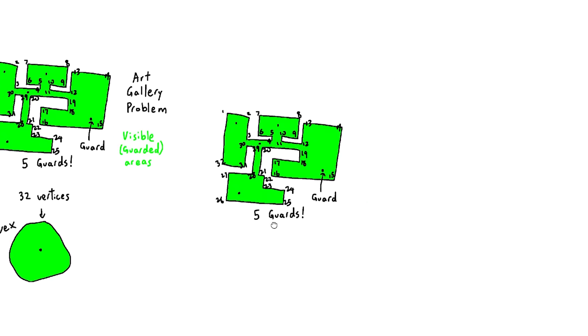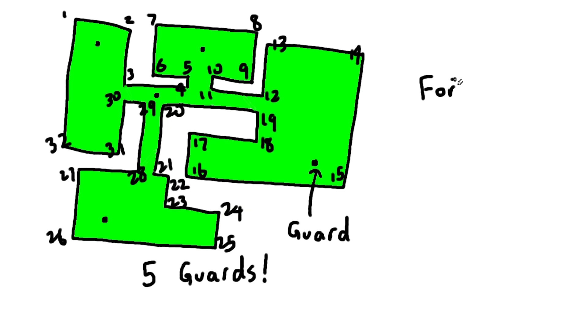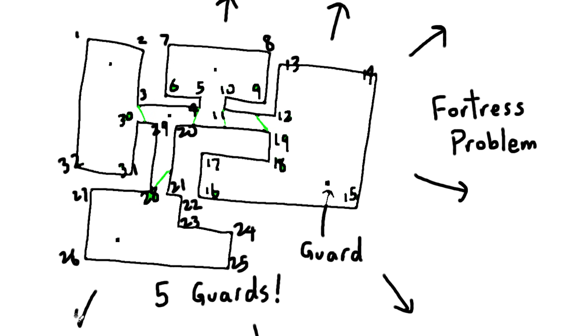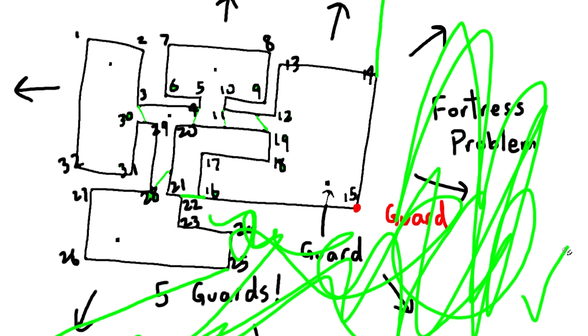Now let's look at a similar problem called the fortress problem, where instead of checking the inside of the polygon, we want to make sure we fill the outside. Think of it like a bunch of medieval soldiers protecting a fortress from an army of moles that might dig up anywhere outside the fortress. Each soldier would be able to check the ground that they can see, everything in their line of sight.